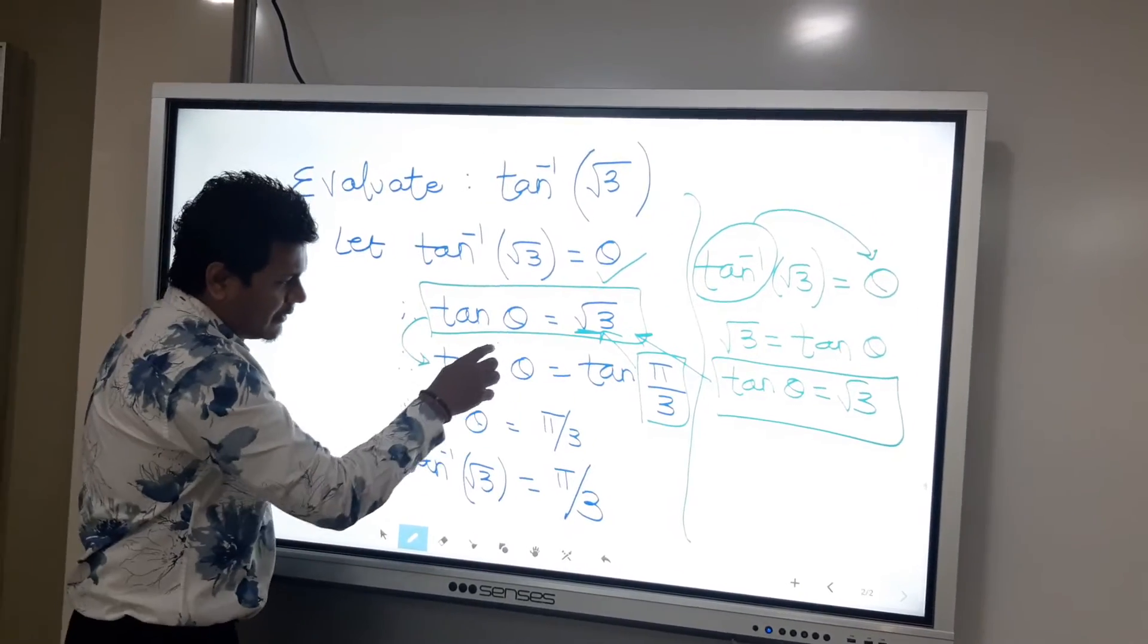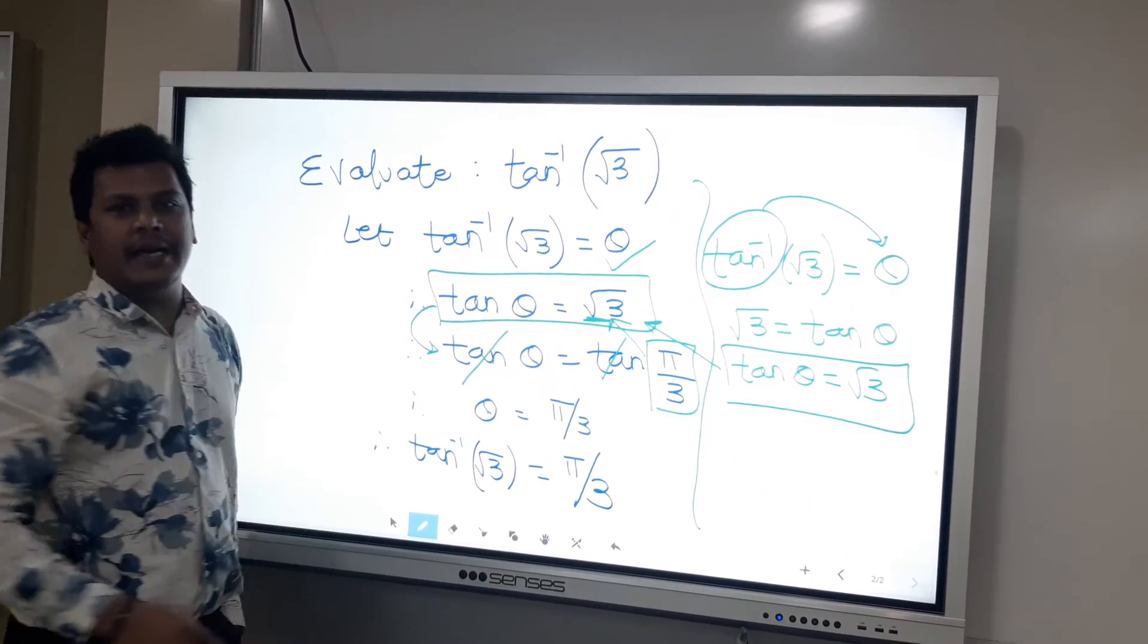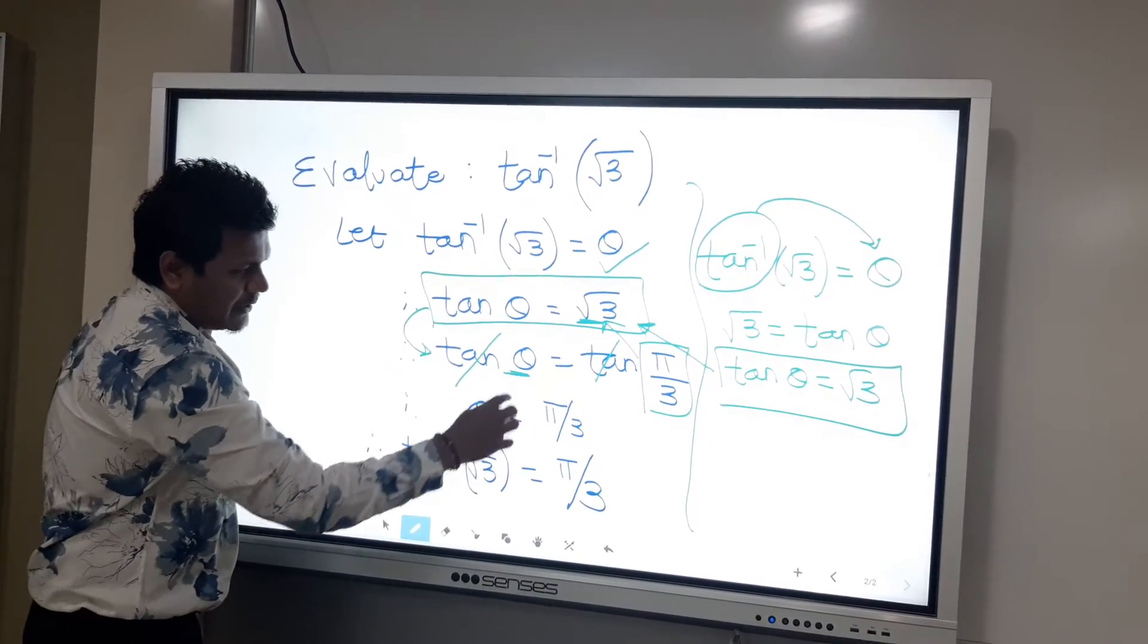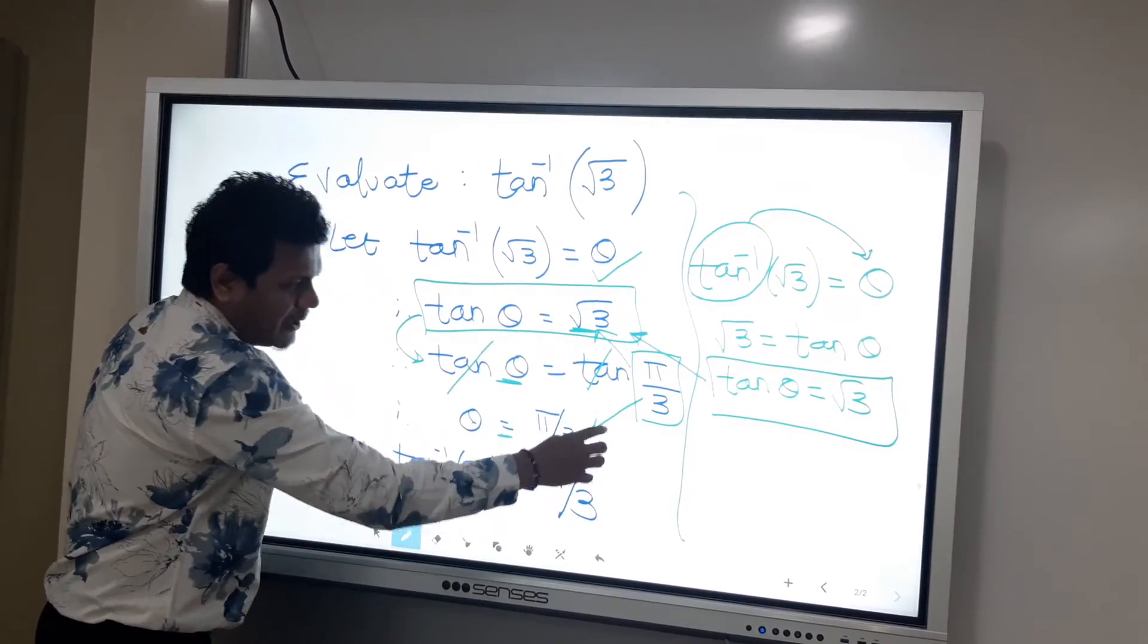On both sides, tan and tan will cancel out, which means theta equals pi upon 3.